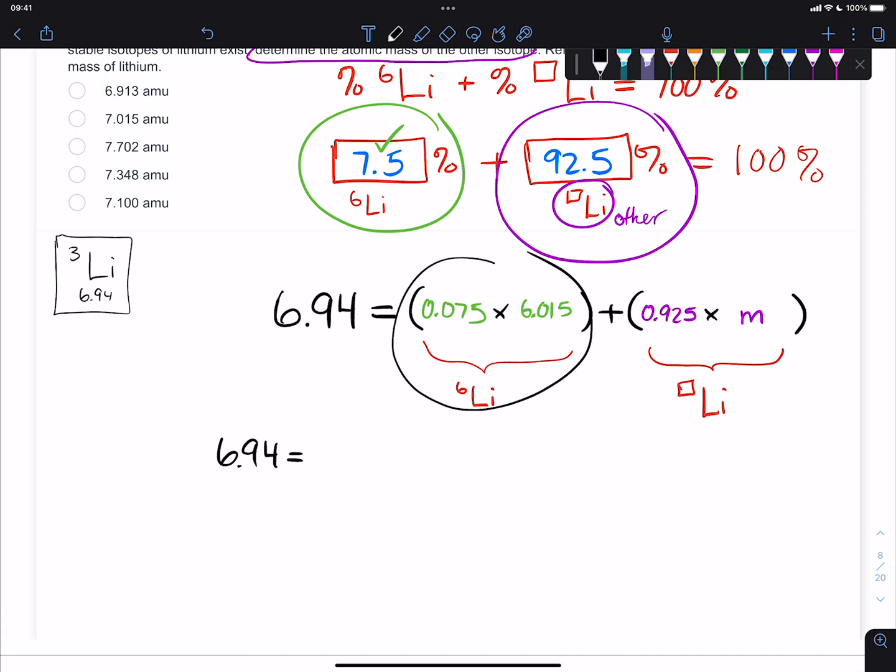You can rewrite this a little bit more neatly if you want. 6.94 is equal to, if it helps you to turn this whole quantity into one number, go ahead and do that. 0.075 times 6.015, if I multiply that, I get 0.451125. And we're adding to that this purple stuff. So we can take this, duplicate, make it neater.